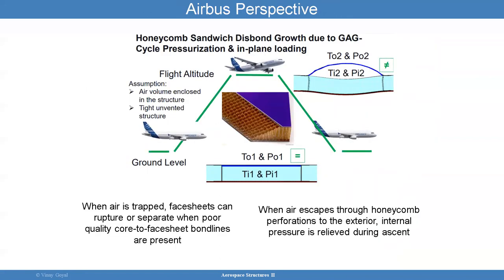What is Airbus's perspective on this topic? Airbus is an aircraft manufacturer. The idea is that when air is trapped, face sheets can rupture or separate due to poor quality between the core and the face sheet. When the air escapes through the honeycomb perforations to the exterior, the internal pressure can be relieved during ascent.